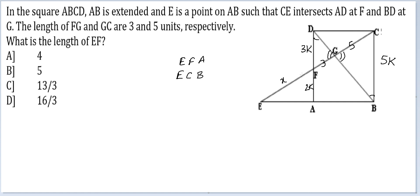Let's take this as X. EF as X. That is the length we are seeking. Look at this. EFA is similar to ECB. So I get 2K by 5K should be equal to X like X plus 8.